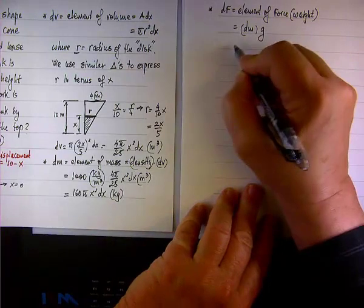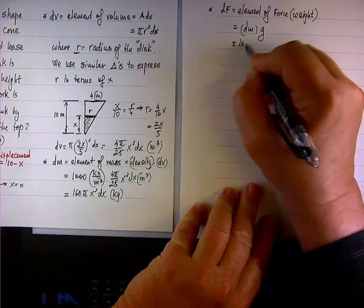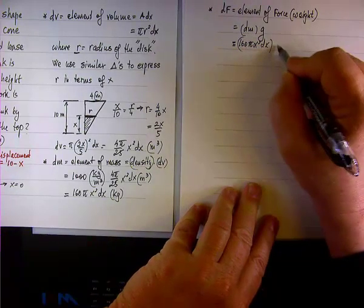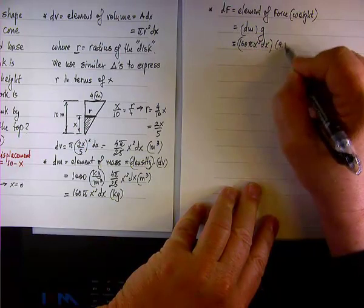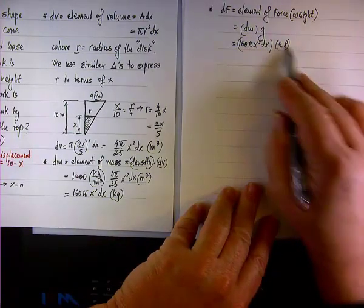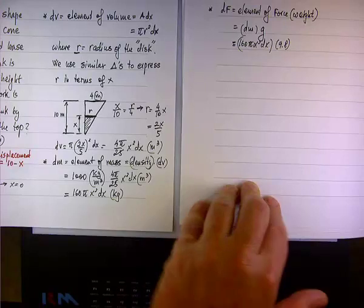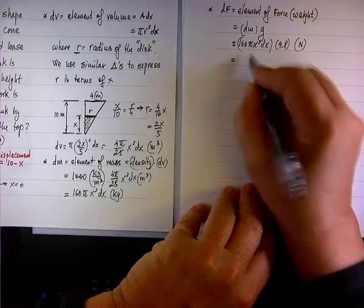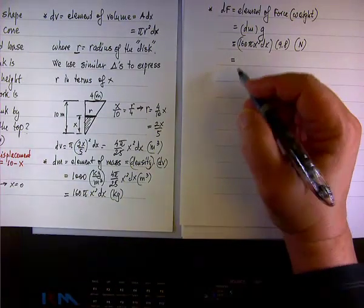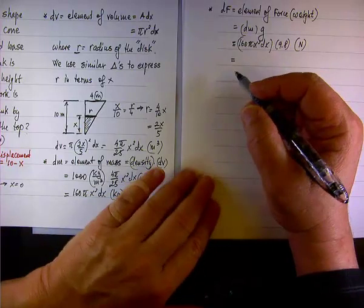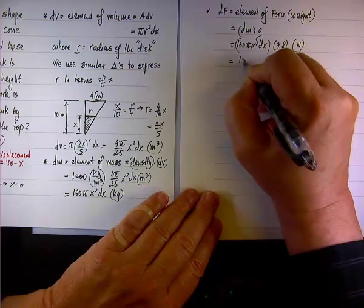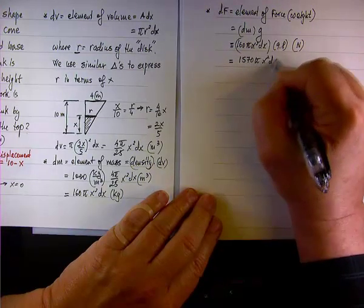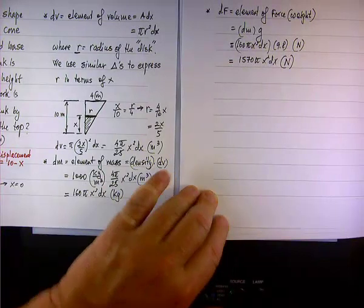So in terms of calculation, we're looking at 160 pi x squared dx times 9.8. And since this is kilogram, and this is the gravity is meter per second squared, we end up getting Newtons as the value, and you calculate it out, which I have, and this will come to 1,570 pi x squared dx Newtons, like so.